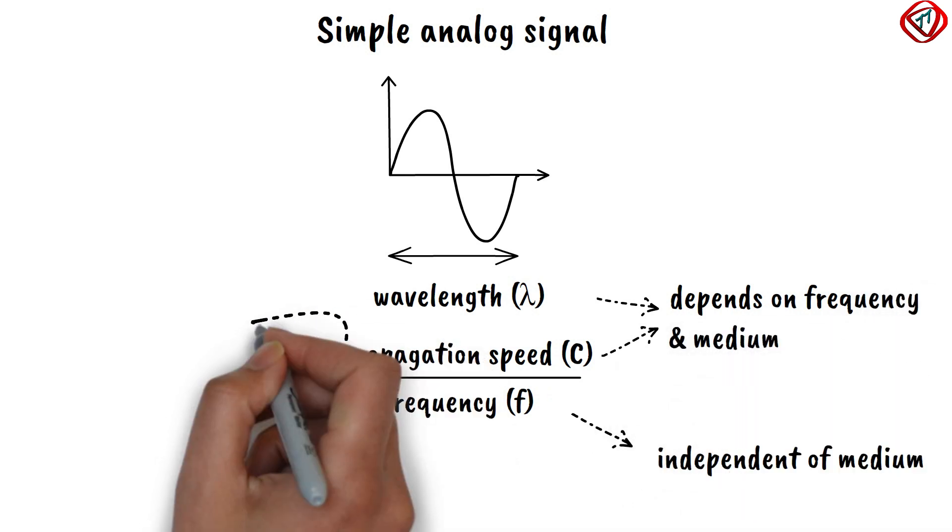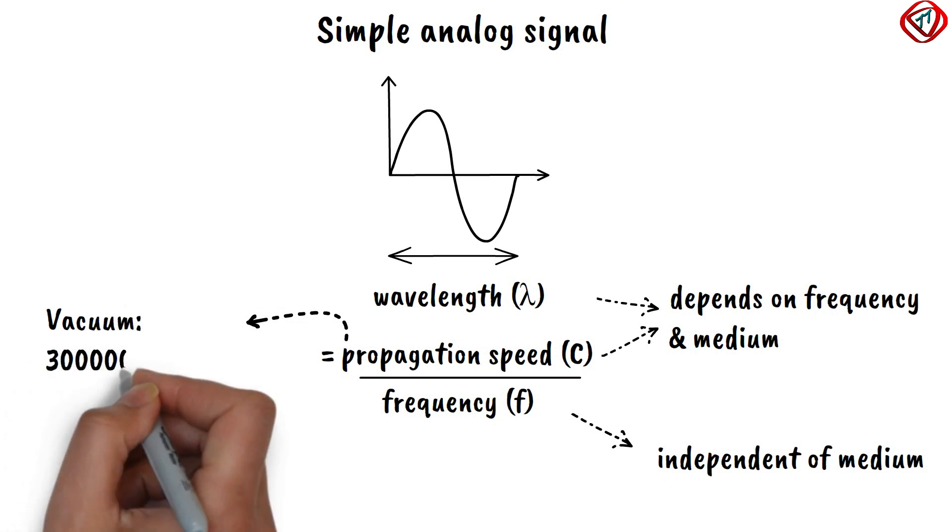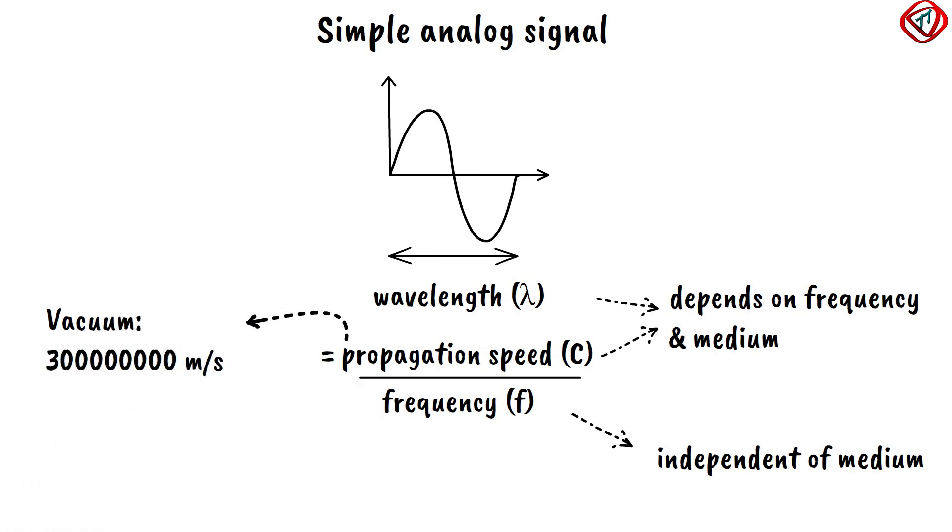The speed of the signal in vacuum is 3 x 10^8 m per second. It is lower in air and even lower in cable.